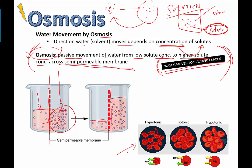The same is true for cells. If you put cells into solutions with different solute concentrations, you can do some horrible things to the cells. If we're talking about red blood cells put into a solution - if the solution outside is a perfect match with the solution inside the red blood cells, everything is said to be isotonic. An equal amount of water is moving in as is moving out, and so the red blood cells are fine and dandy.